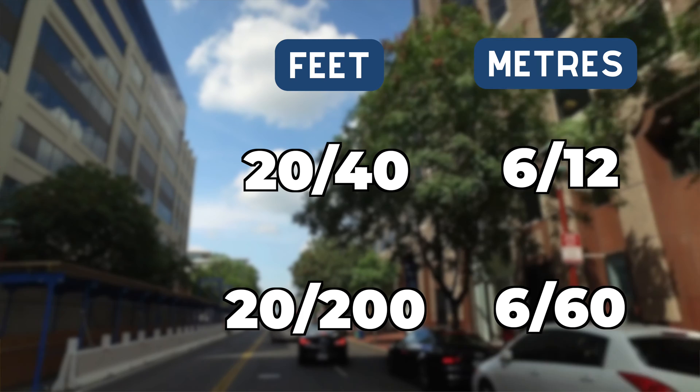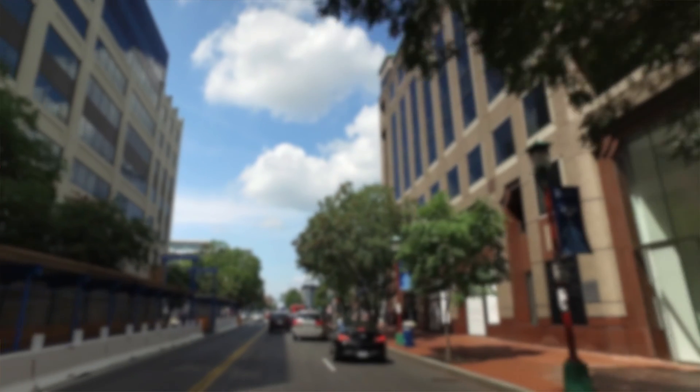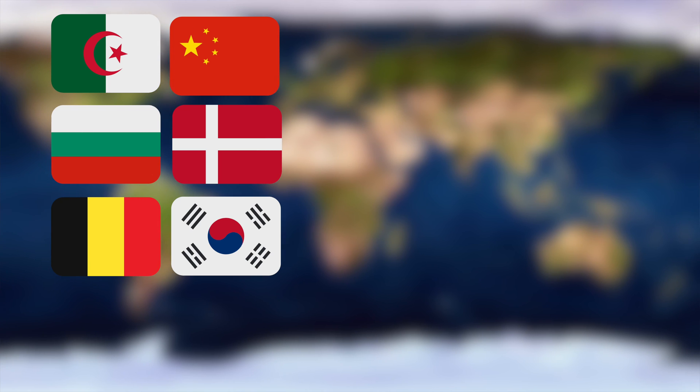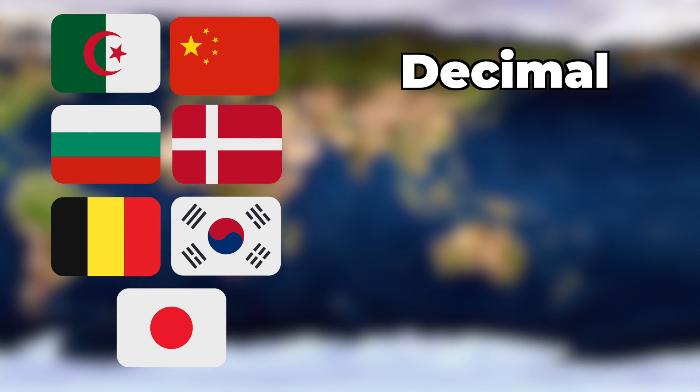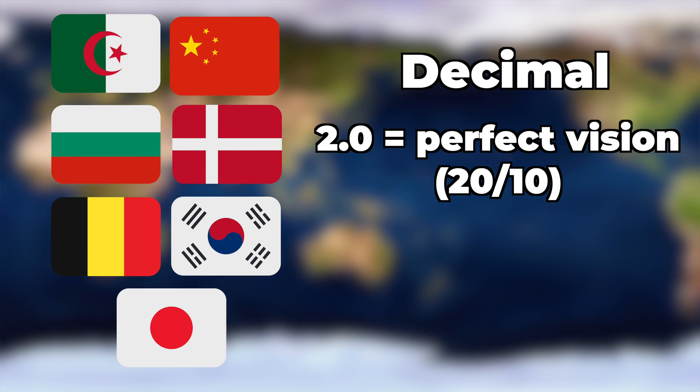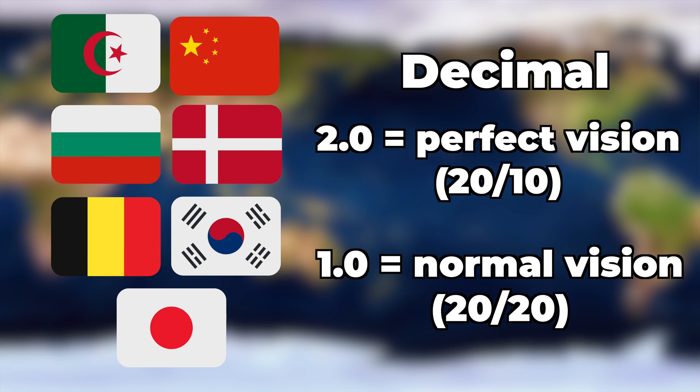An added layer of complexity is introduced when you consider countries like Algeria, Bulgaria, Belgium, China, Denmark, Korea, and Japan, as the visual acuity is displayed as a decimal rather than a fraction. 2.0 indicating perfect vision and 1.0 indicating normal vision.